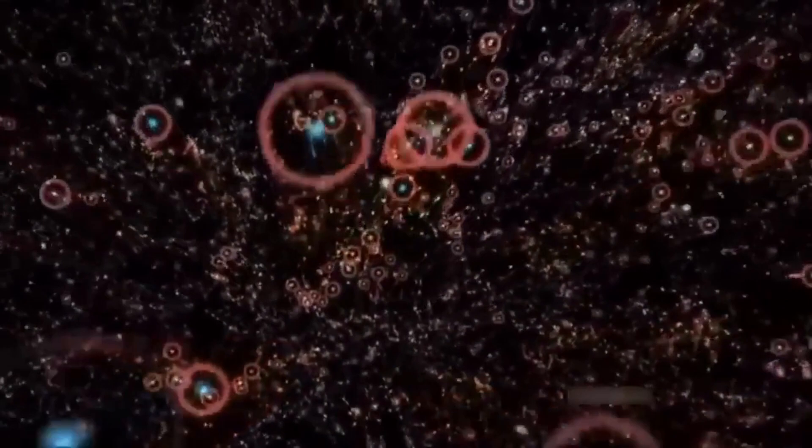So, how did every big galaxy in the universe end up with a giant black hole in the middle? To understand, we have to go back to the very beginning.